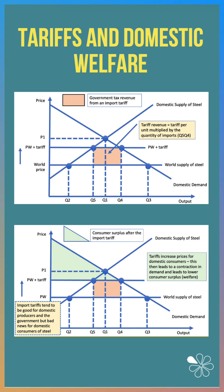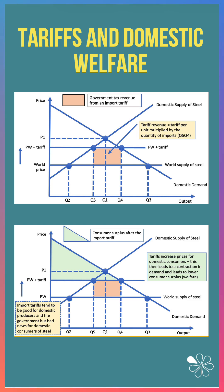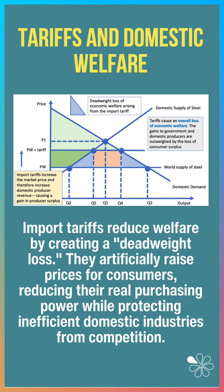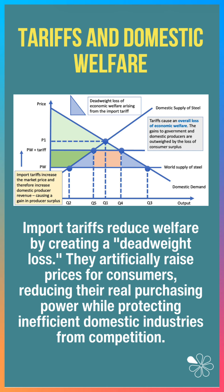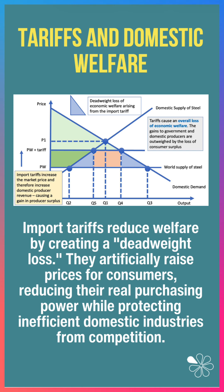Now, as a result of the tariff, prices go up, so consumer surplus falls. There's a contraction in demand and lower consumer surplus or welfare. Import tariffs reduce welfare overall. The blue areas show the deadweight loss of welfare here. By creating a deadweight welfare loss, they artificially raise prices for consumers, reducing their real purchasing power, whilst at the same time protecting some potentially inefficient domestic supply industries from competition.